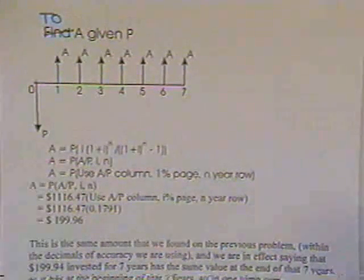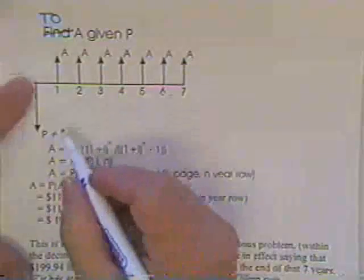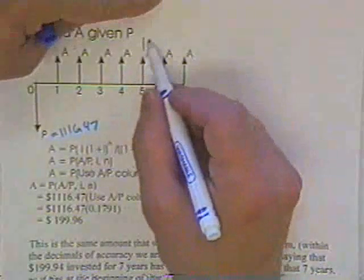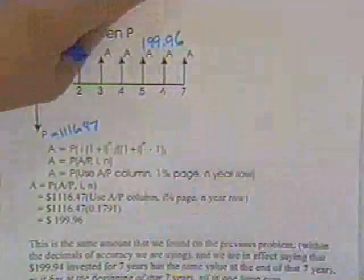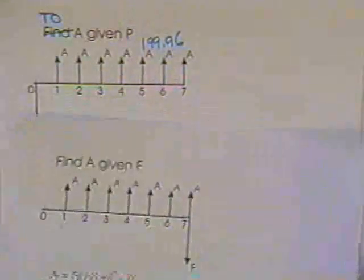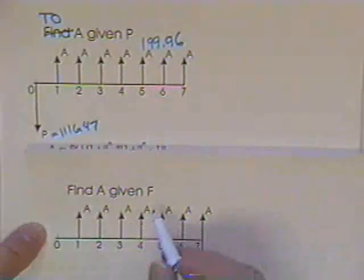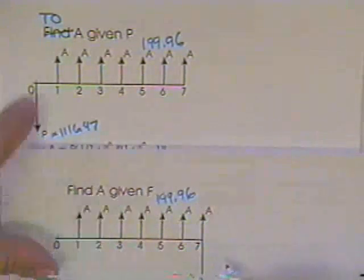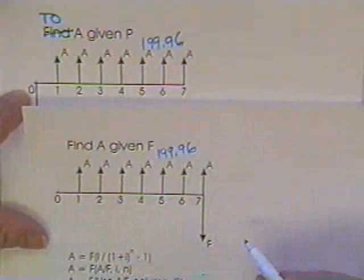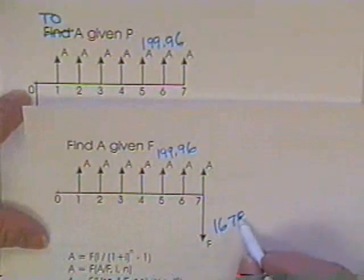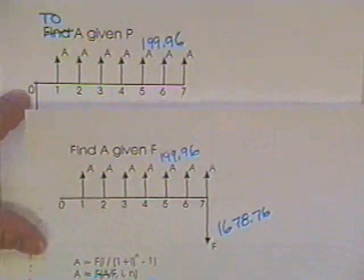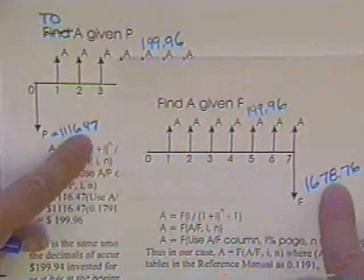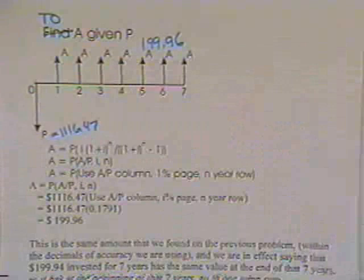So what it kind of sounds like is that if you put in $1116.47 and can take out $199.96 and take out $1,678.76, then we really probably ought to find that this is the same as this equivalence value-wise. Let's see if that turns out to be right.